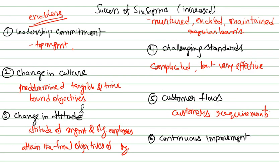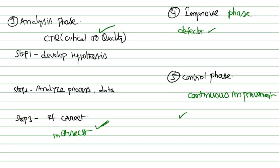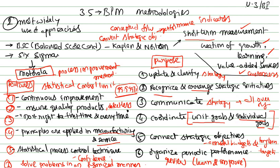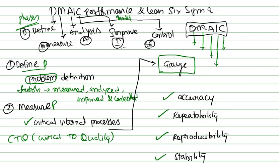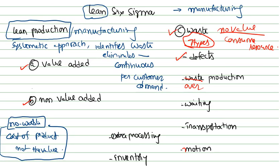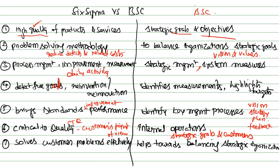To recap the session: we discussed different strategies and VPM methodologies including BSC and Six Sigma and how to align strategies and actions. We covered DMAIC — Definition, Measure, Analysis, Improvement, Control — and discussed Lean Six Sigma, how to improve Six Sigma success through enablers, and the difference between Six Sigma and the Balanced Scorecard.